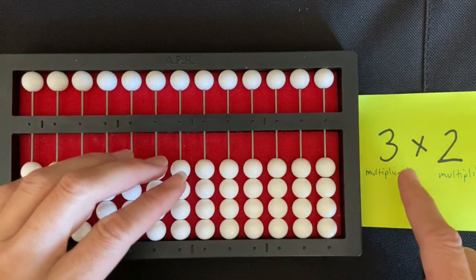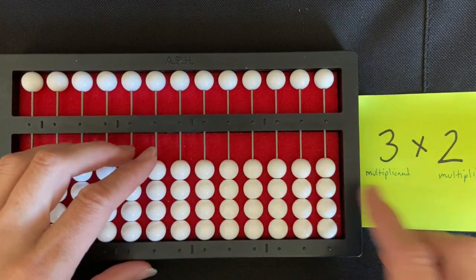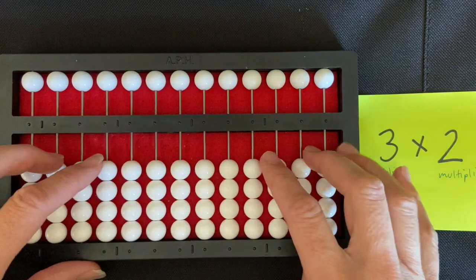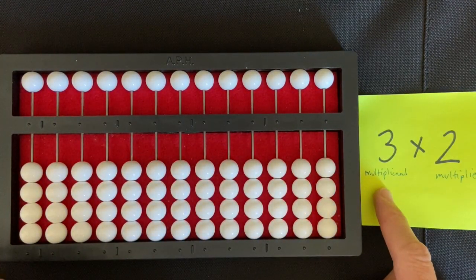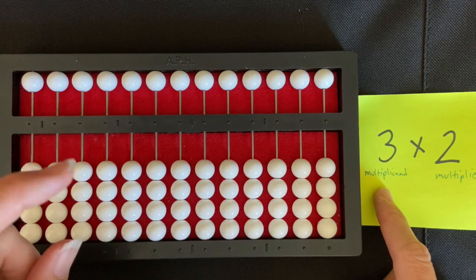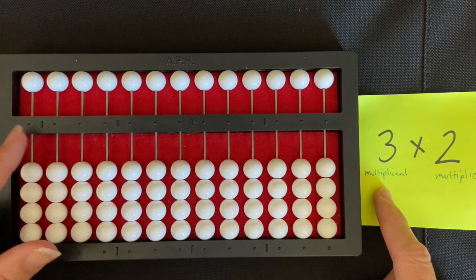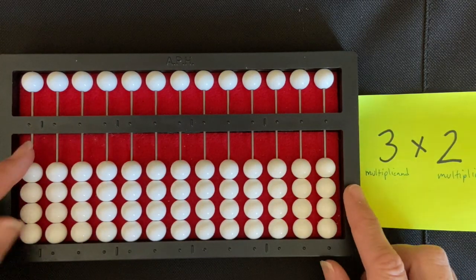I'm going to be doing another one-digit-by-one-digit multiplication on the abacus using the counting method. So I start here with my multiplicand and I want to set that in the extreme left. And so I'm going to set three on the left-hand side of my abacus.